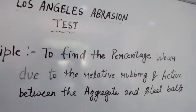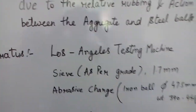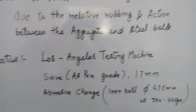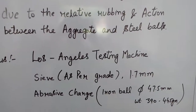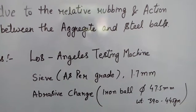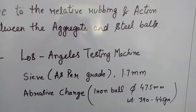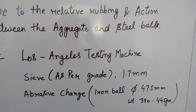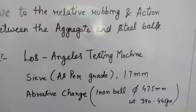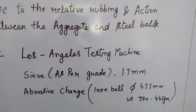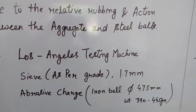The apparatus used in this test are the Los Angeles testing machine, sieve, and abrasion charges also known as iron balls, whose diameter is 47.5 mm and whose weight is approximately 390 to 445 grams.